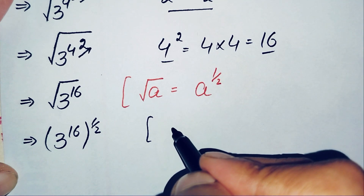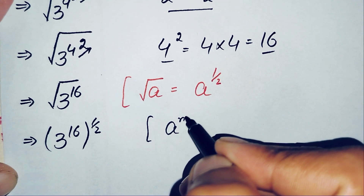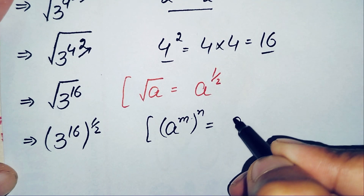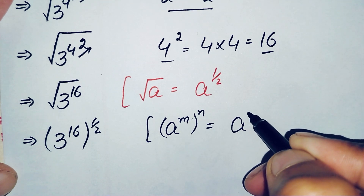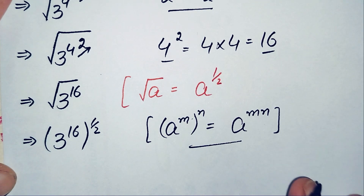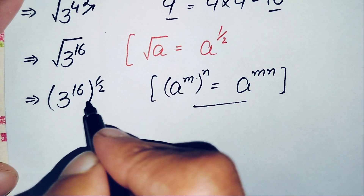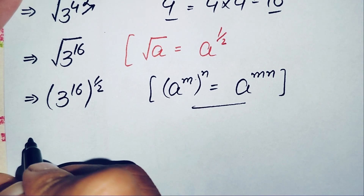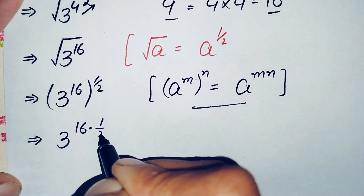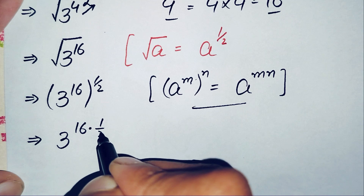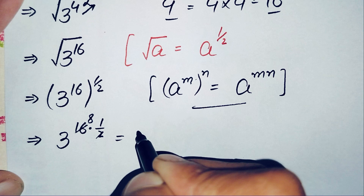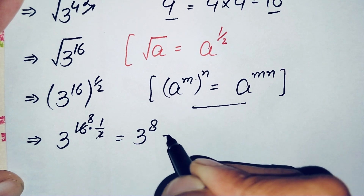We use the exponential property: when we have a number in the form r raised to power m, whole raised to power n, this becomes r raised to power m times n. Applying this property, we multiply the two powers 16 and 1 by 2. Here 2 times 1 is 2 and 2 times 8 is 16, so this simplifies to 3 raised to power 8.